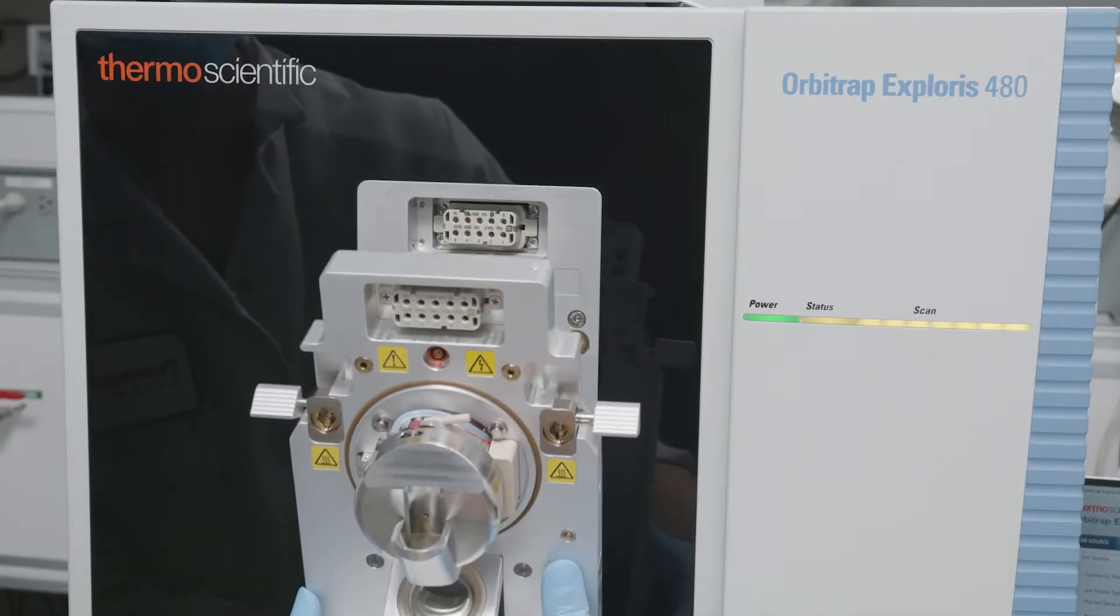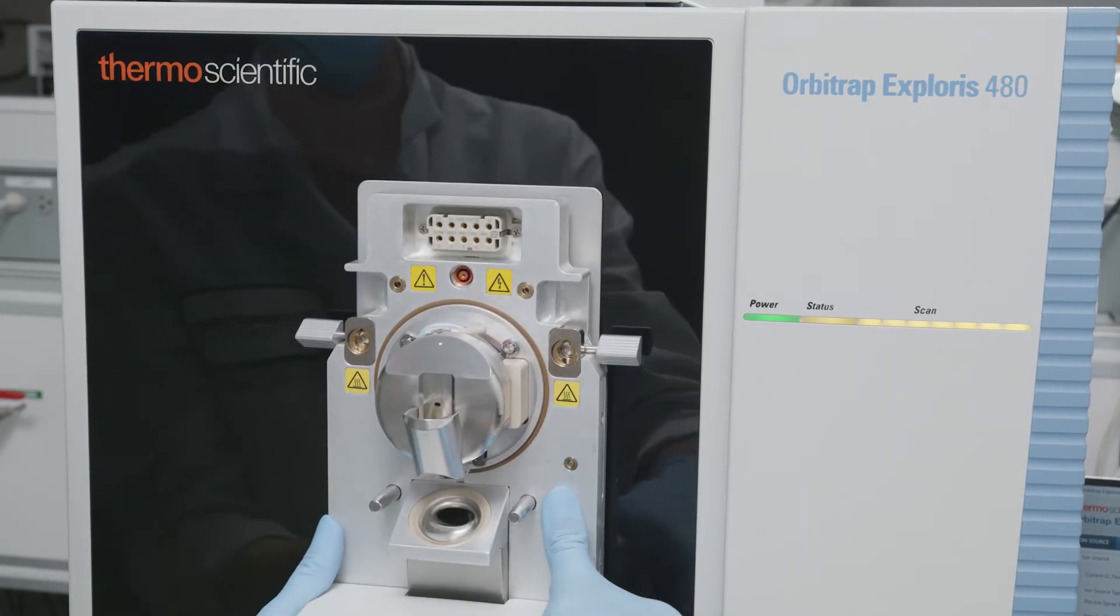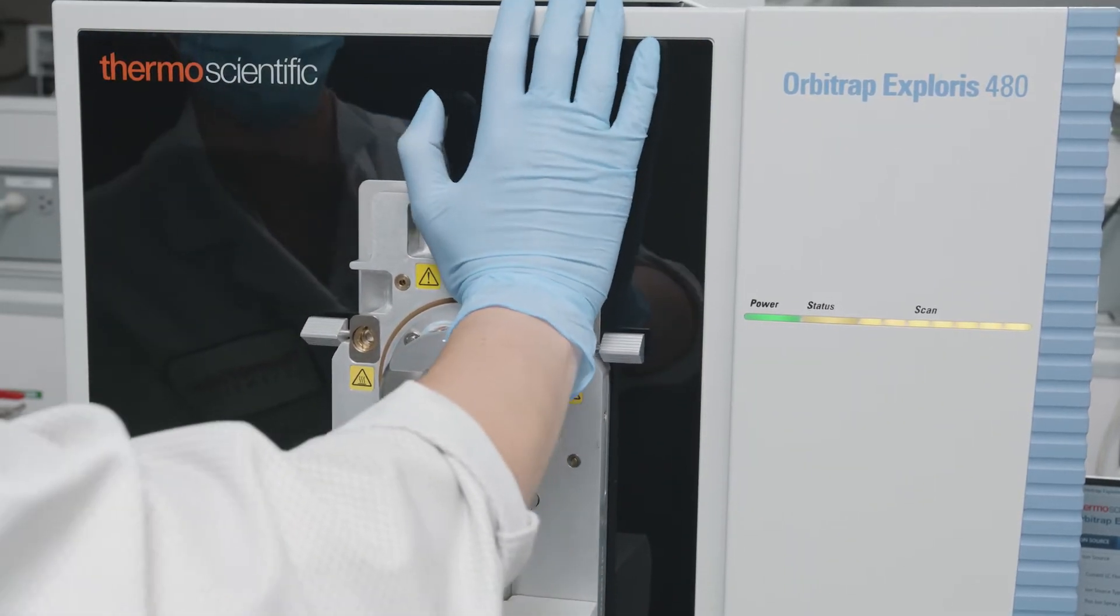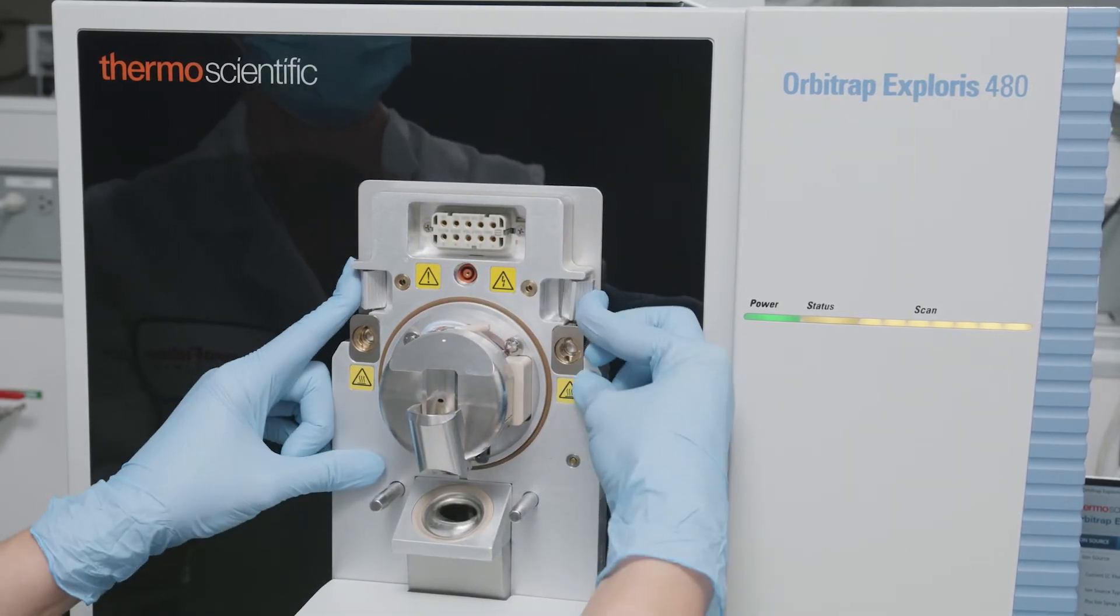Install the FAIMS housing adapter onto the front of the mass spectrometer. Push against the top and the middle part of the housing adapter to make it sit flush with the instrument.